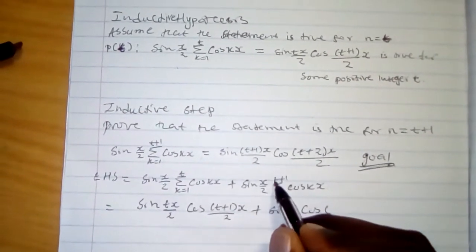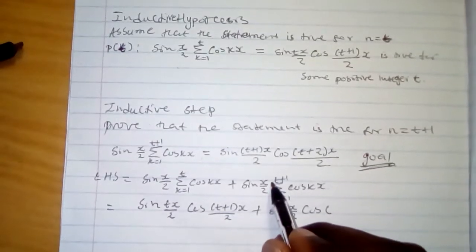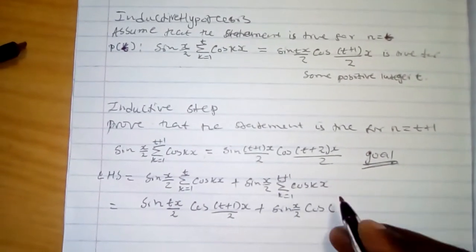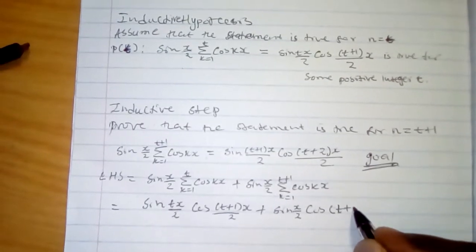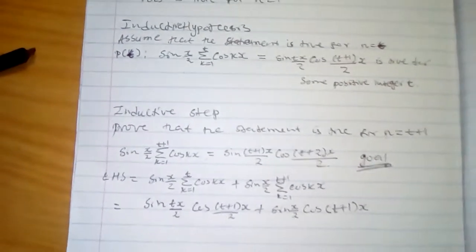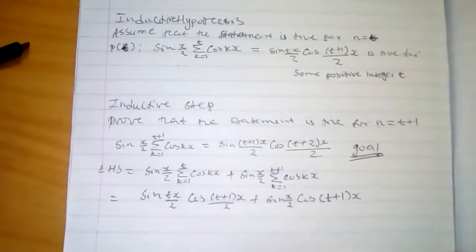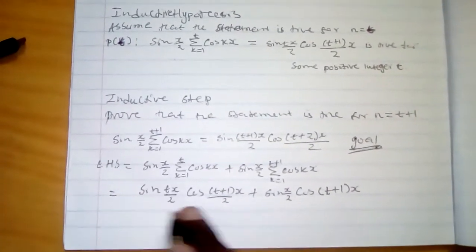When n is equal to t plus 1, then our k is equal to 1. It still means that we will substitute t plus 1 x as n. Here you want to prove using this.